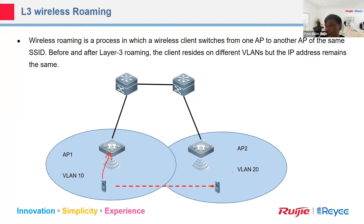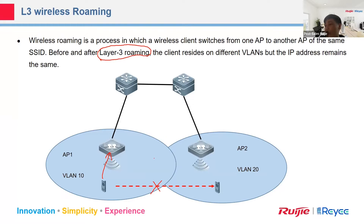This mobile phone is moving to the IP2 area. However, IP2 area is assigned VLAN 20 to the client. So if I'm moving from IP1 area to IP2 area, what happens if you don't have Layer 3 roaming? Without it, the connection will be interrupted, and the phone will connect to IP2 and receive the IP address of VLAN 20.